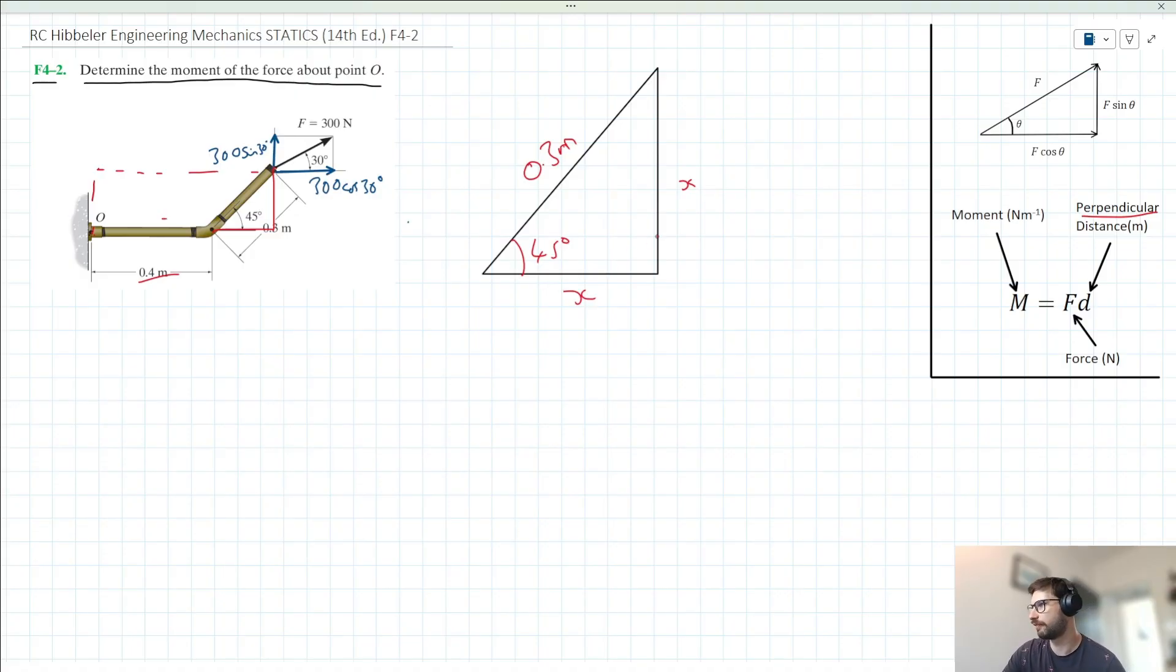One way to solve for x here might be to use Pythagoras theorem. So we note if we're saying a squared plus b squared equals c squared, and c is our hypotenuse here, which is 0.3, and a and b are our two other sides, which first take a value of x, we could say then that 2x squared is equal to 0.3 squared, right?